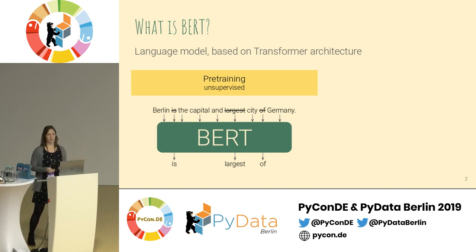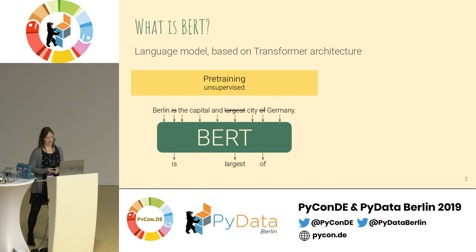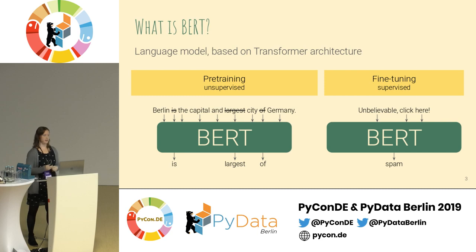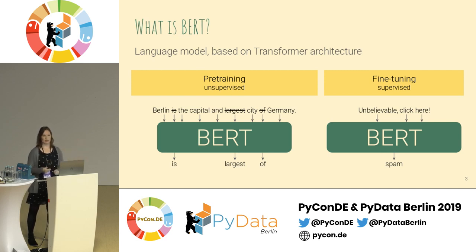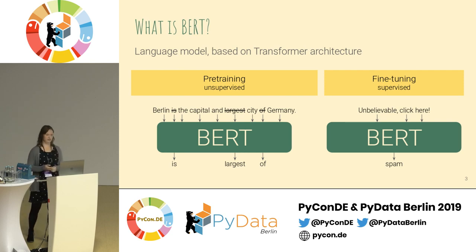The representations that BERT learns using this training procedure appear to be really good representations for a range of downstream tasks. Once we're done with the pre-training phase, we can move over to the fine-tuning phase and train, for example, a classification model. We use exactly the same model as before — we only replace the last layer, so BERT predicts a class label instead of masked words. Then we can train on a little bit of labeled data to complete this task.